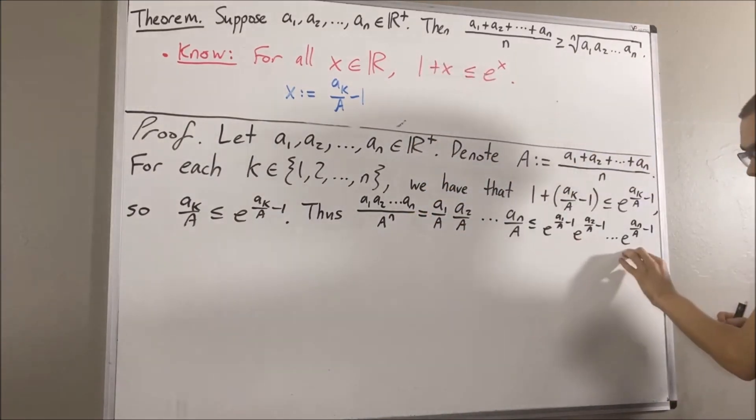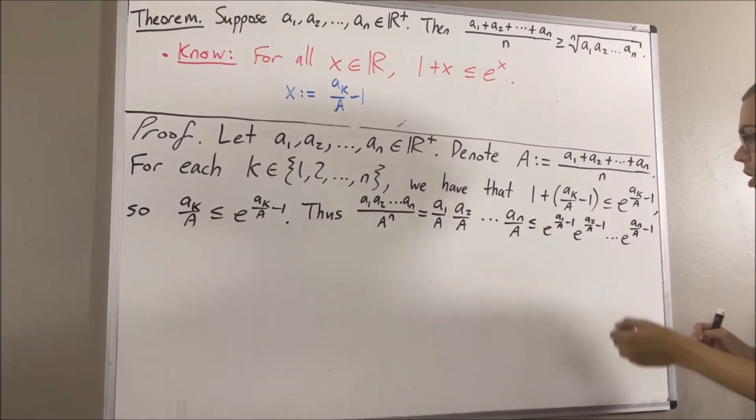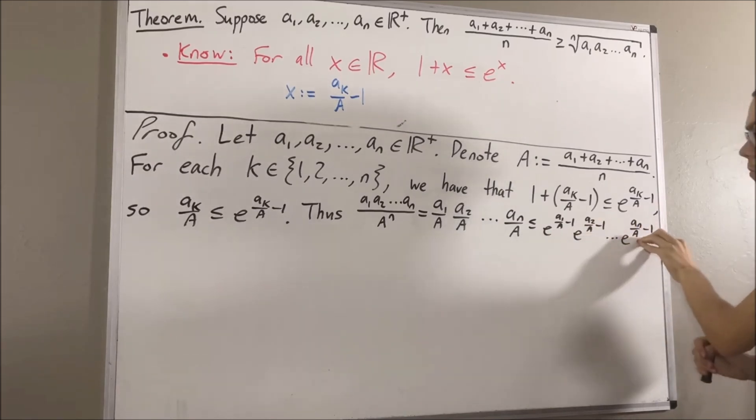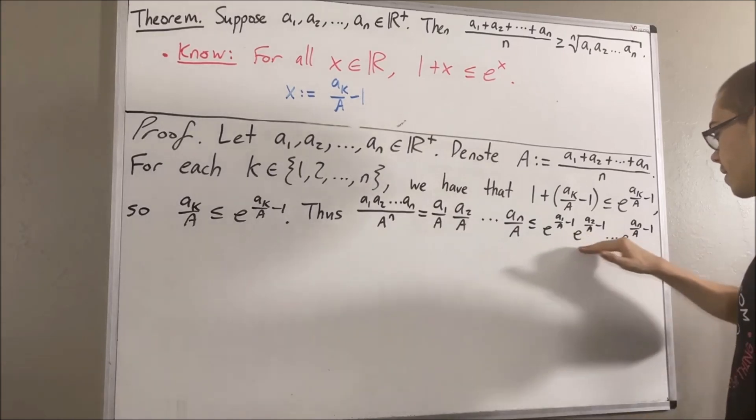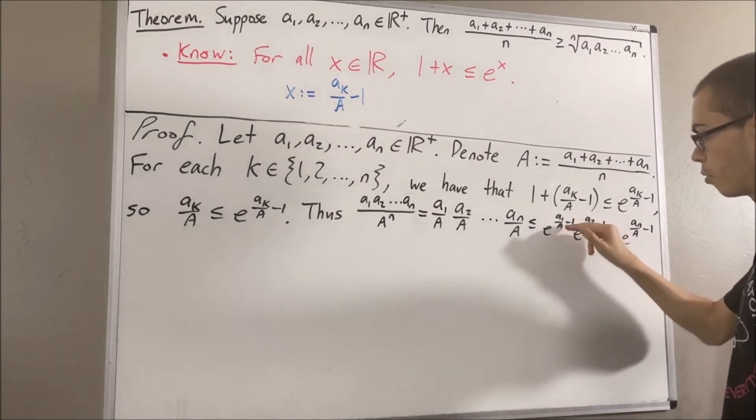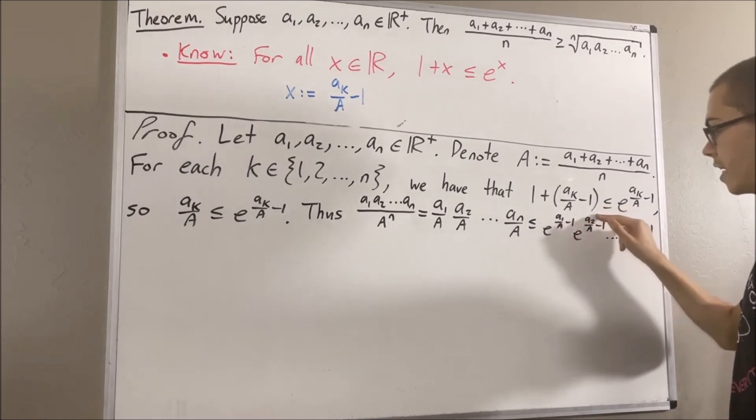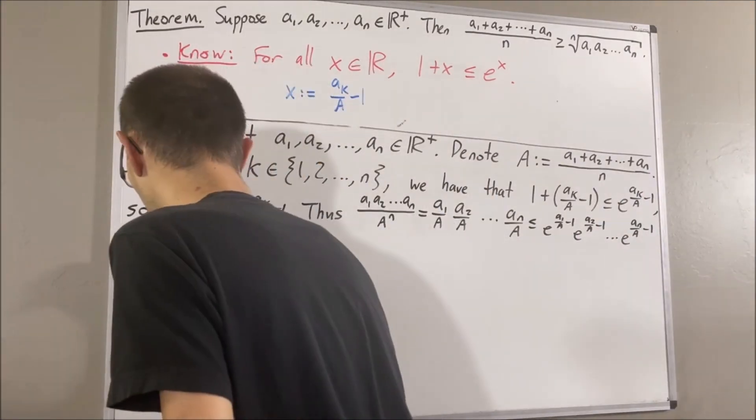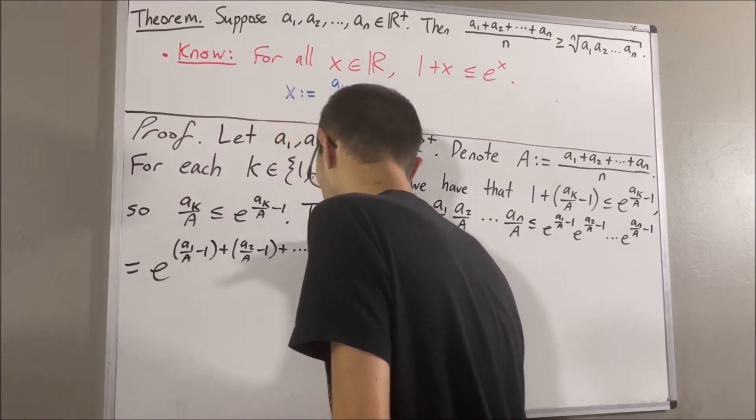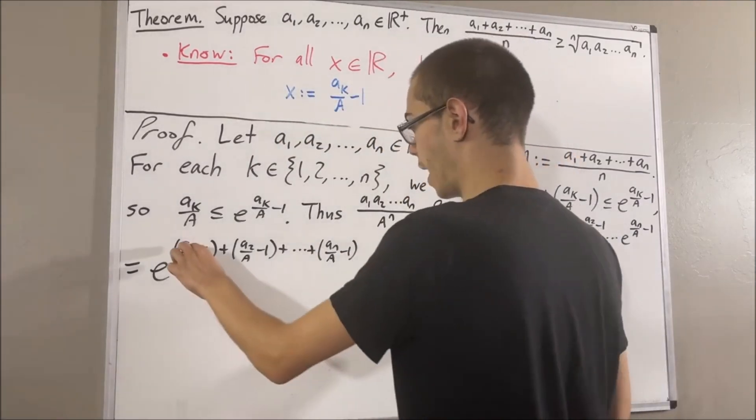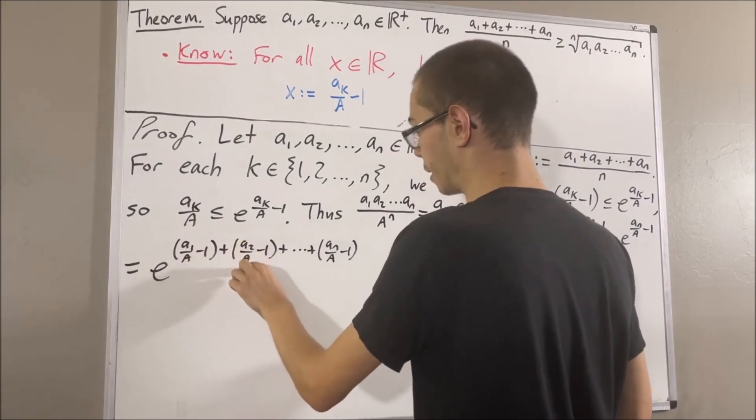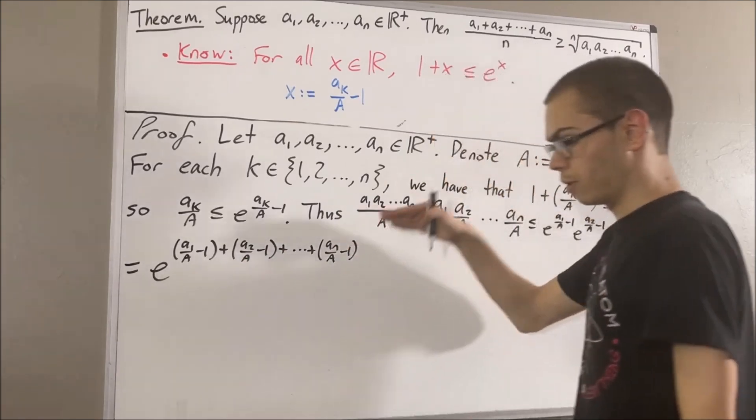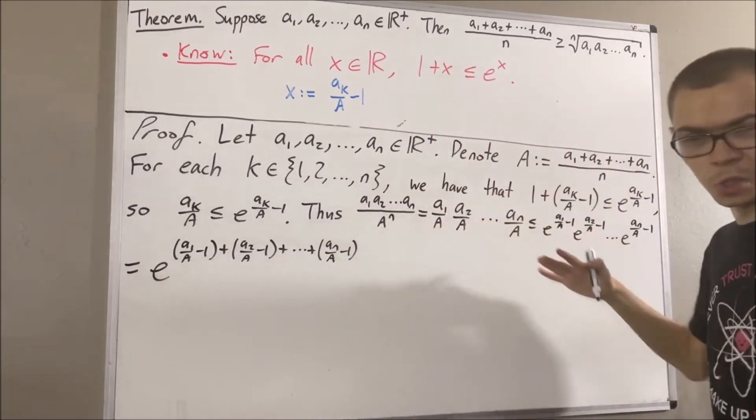if you recall, one of the properties of the exponential function is that if we multiply all these together, the exponents will add. So, really, we have that this is equal to e to the power of a1 over capital A minus 1, plus a2 over capital A minus 1, plus dot dot dot plus an over capital A minus 1. Now, notice, we're doing a1 over capital A, plus a2 over capital A, plus dot dot dot plus an over capital A. Adding all those together will give us a1 plus a2 plus dot dot dot plus an over capital A.